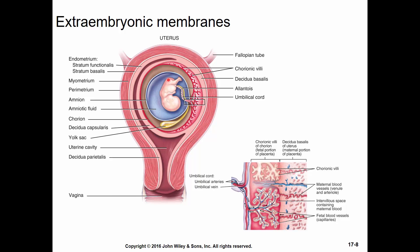This embryo is probably 8 to 10 weeks and is starting to look like a human — you can see arms and legs forming. We also see the formation of the umbilical cord. From the earlier picture, there was the yolk sac: a piece of it pinches off and forms the GI tract, and a lot of it folds into the umbilical cord.